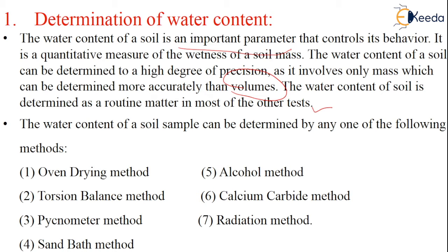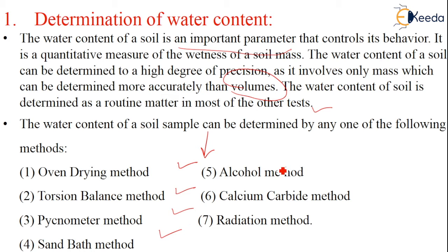The water content of the soil can be determined by the following methods. We have many methods: oven drying method, torsion balance method, pycnometer method, sand bath method, alcohol method, calcium carbide method, and radiation method. Let us know briefly about how to find water content using these different methods.